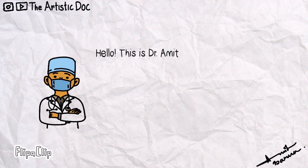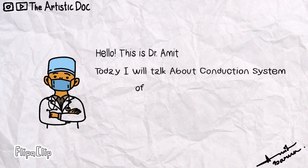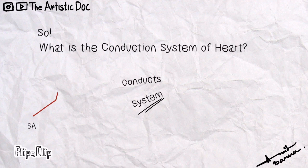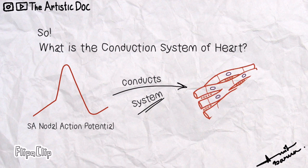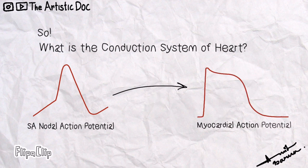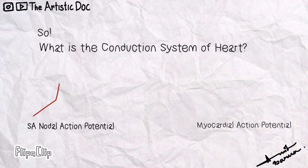Hello everyone, this is Amint Burhav from Archicon Medical College, Kolkata. Today I will discuss the conduction system of the heart and the components of the ECG graph. The conduction system is a system that conducts electrical action potentials to the cardiac myocardial action potential, where the myocardial action potential is being generated.